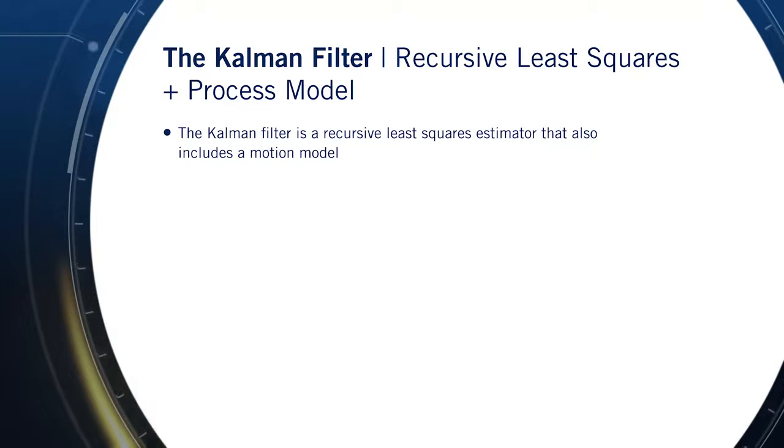Once we have our system in hand, we can use an approach very similar to that we discussed in the recursive least squares video, except this time, we'll do it in two steps. First, we'll use the process model to predict how our states, remember that we're now typically talking about evolving states and not static parameters, evolved since the last time step, and we'll propagate our uncertainty.